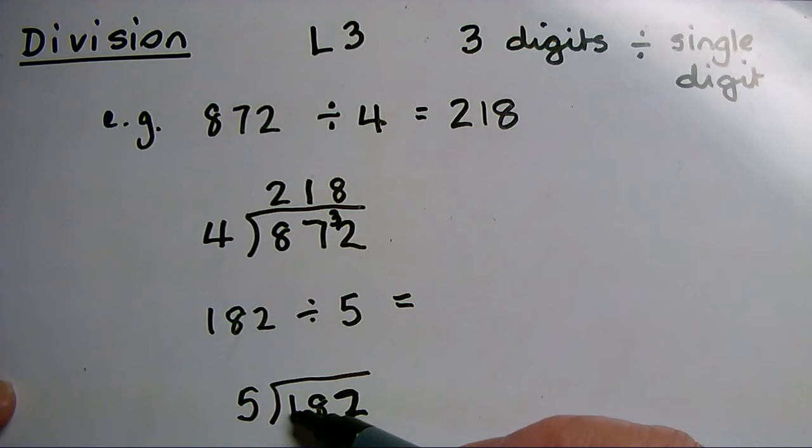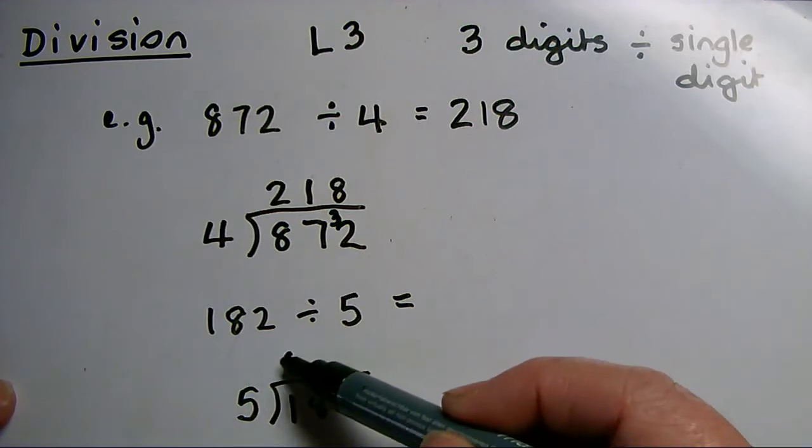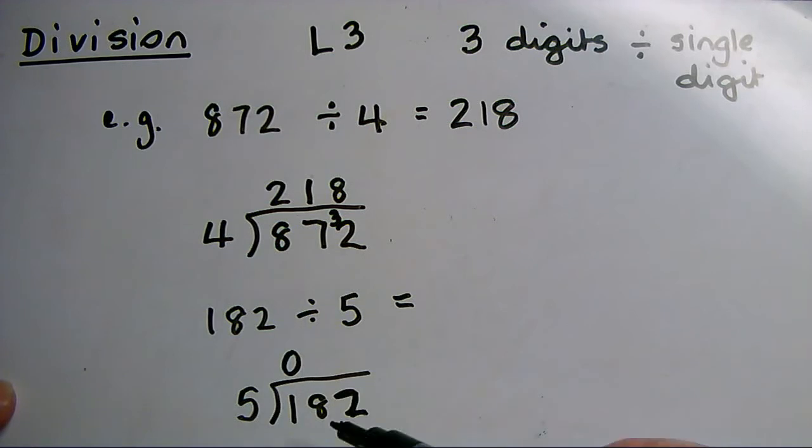How many 5s can I get out of 1? I can't get any, and at this level we encourage students to write the 0 at the top and carry that 1 across, so that it's clear that the next thing I need to do is divide 5 into 18.